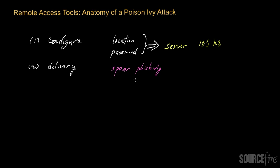So really there are a host of ways — spear phishing, exploitation, and others. But the main message is that these methods are orthogonal to the rest of the process involving poison ivy. They really are just a way to deliver the poison ivy server payload onto a victim's system.